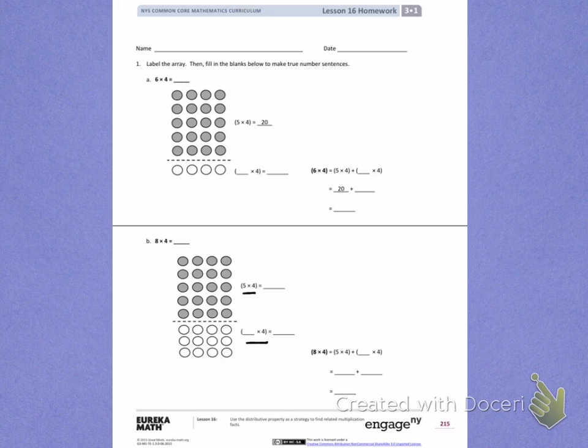I'm going to skip count by 4s to label my array and help me solve 5 times 4. I have 4, 8, 12, 16, 20. 5 times 4 equals 20.